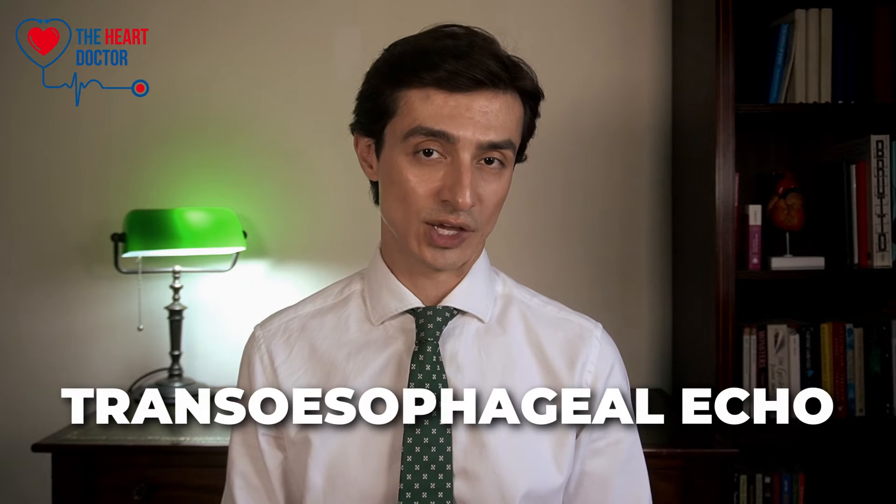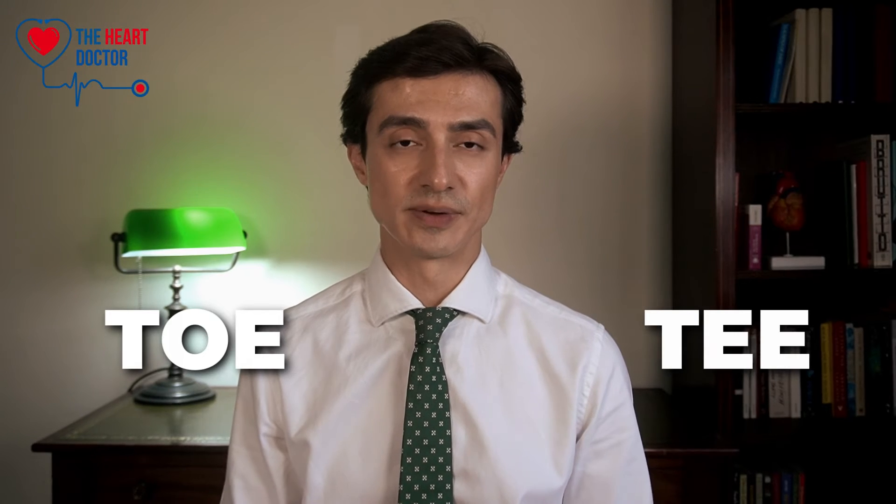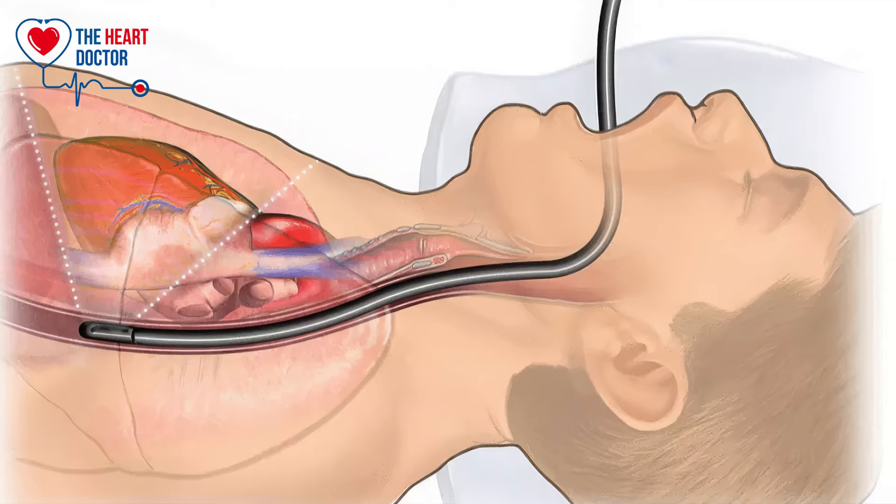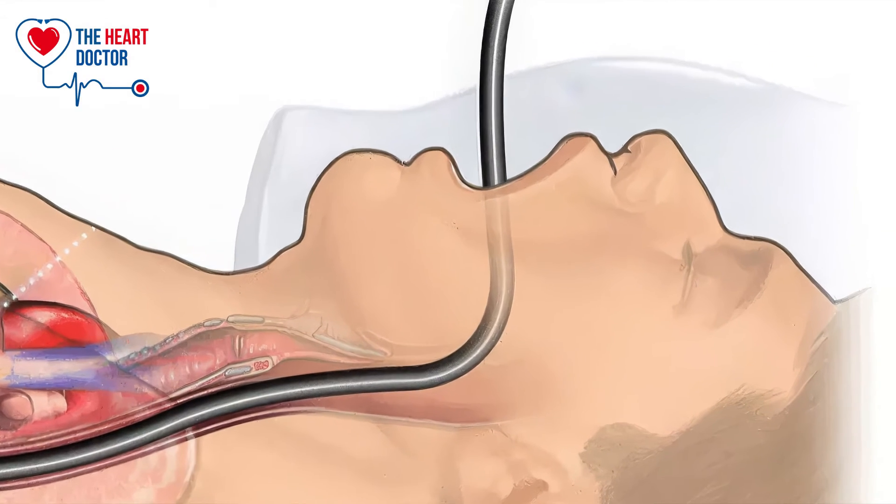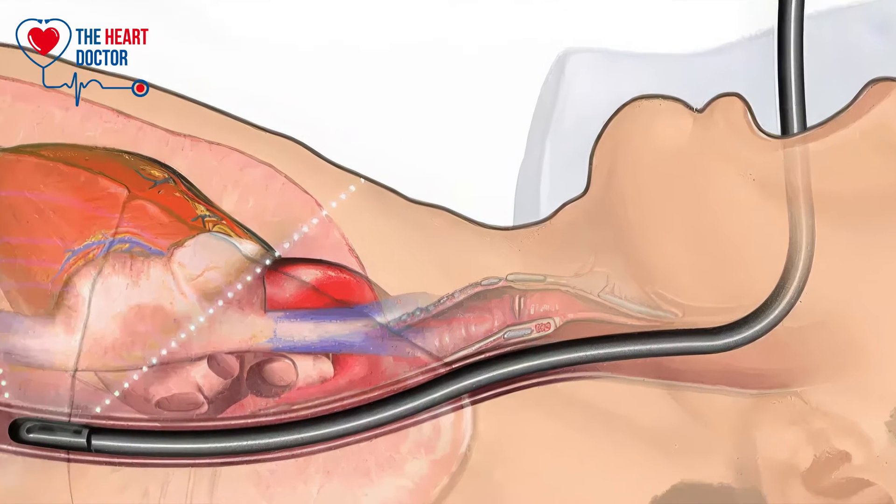The second type of echo is the transoesophageal echo, also known as a TOE or TEE depending on which country you live in. This is a more invasive type of echo as the transducer is attached to a thin tube that's guided down your throat into your food pipe called your esophagus. Since the esophagus is close to the heart, this type of echo provides clearer images of certain parts of your heart that may not be visible with the standard transthoracic echo. This is why it's called transoesophageal — the sound waves travel through the esophagus to reach your heart.